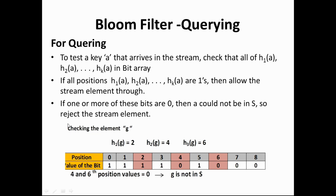Consider querying element g, whose position in the alphabet is 7. h1(g) = 7 mod 5 = 2; position 2 has value 1. h2(g) = 7 mod 3 = 4 — wait, the value at position 4 is 0. h3(g) gives position 6, which also has value 0. Since two hash function positions have value 0, we conclude that g is not in S. This is how Bloom filter querying works.